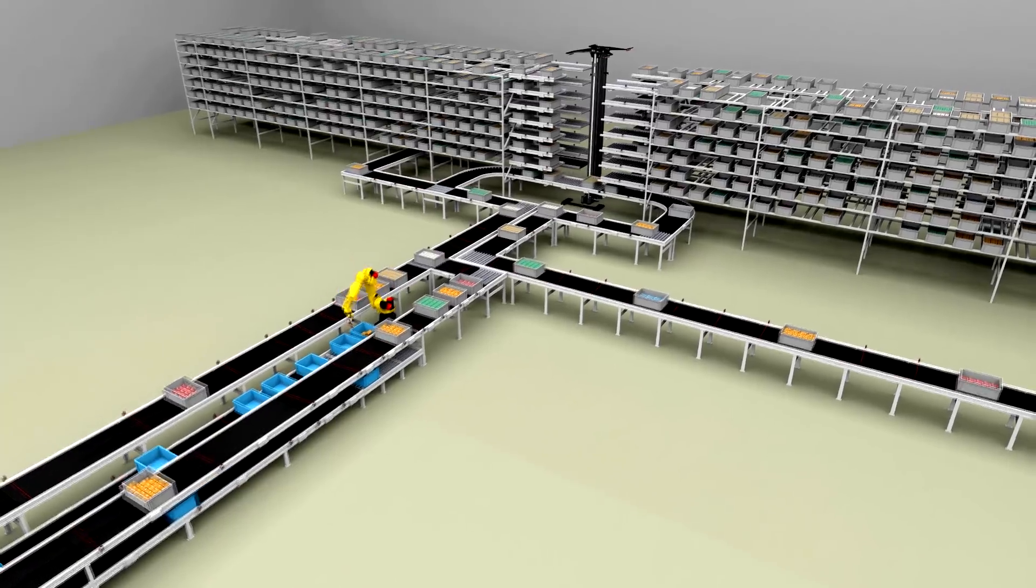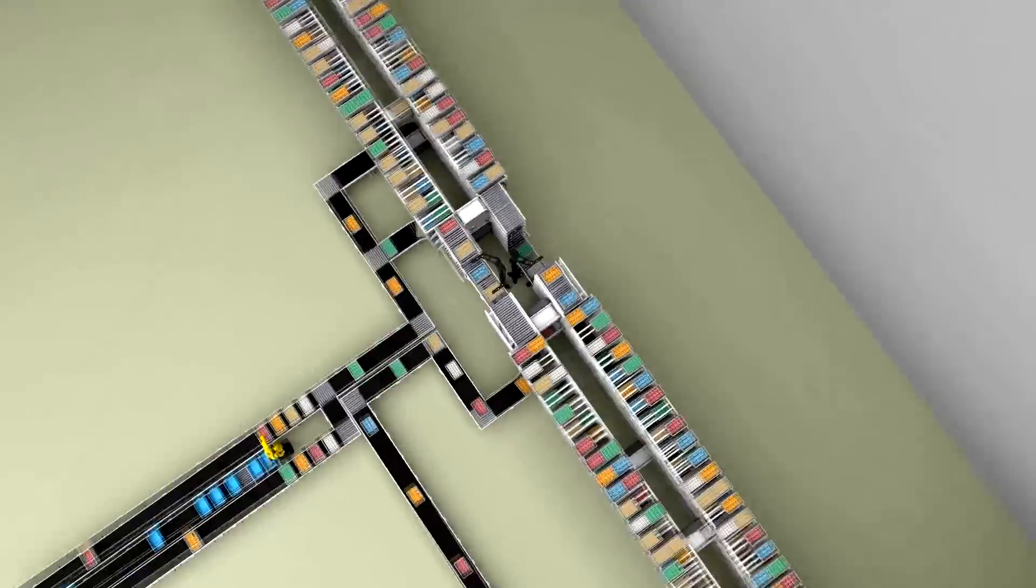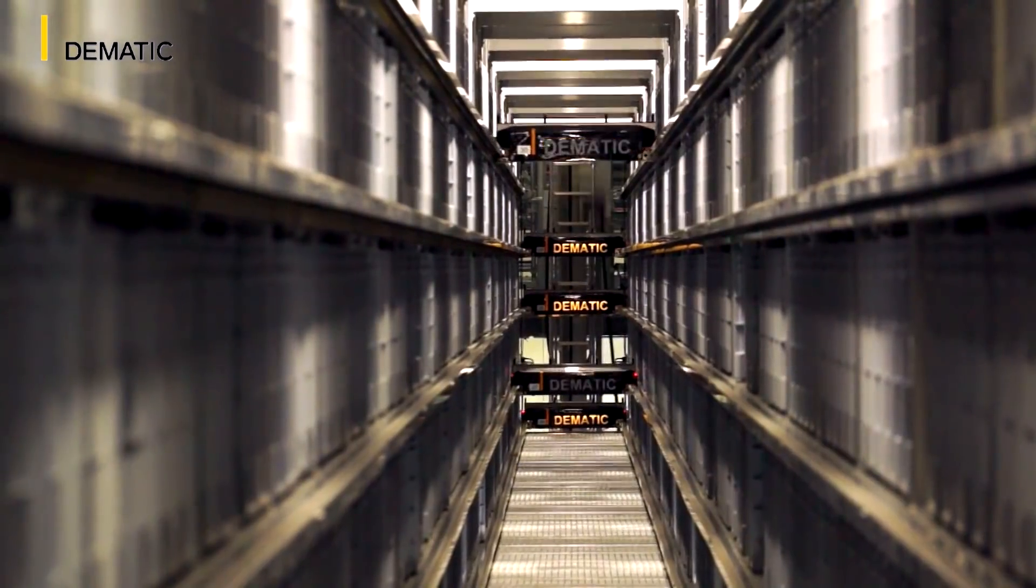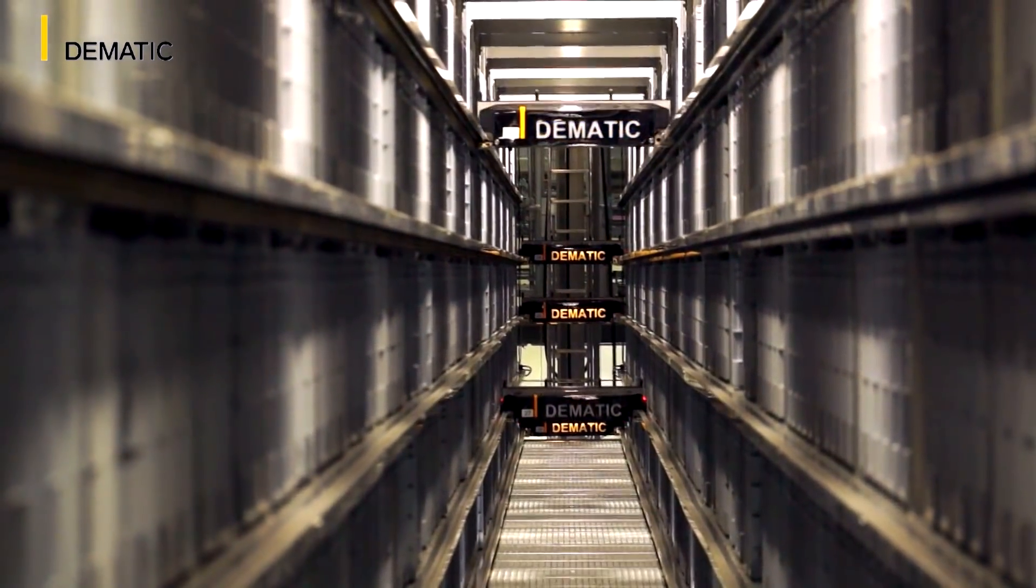Here's how it works. Inventory is received and staged in a high density automated storage subsystem. Typically there is one SKU per tote.